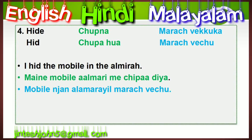Second form 'hid': choupa huwa / marach vechu. Example: 'I hid the mobile in the almirah.' In Hindi: mene mobile almari me chipa diya. In Malayalam: mobile nyan ala maril marach vechu. Something like that we can use.